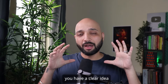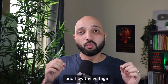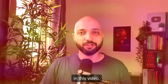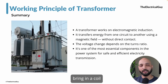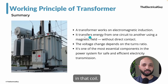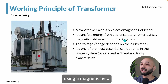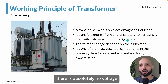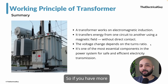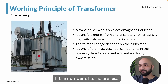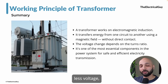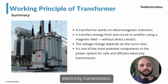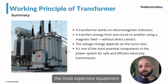To recap: a transformer works on electromagnetic induction — bring a coil near a rotating magnetic field and voltage is induced. The transformer transfers energy from one circuit to another using a magnetic field without direct contact; we verified there is absolutely no voltage between the two windings. The voltage change depends on the turns ratio — more turns on the secondary means higher voltage, fewer turns means lower voltage. The transformer is one of the most essential and most expensive components in the power system for safe and efficient electricity transmission.